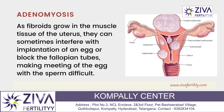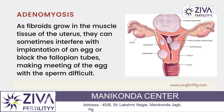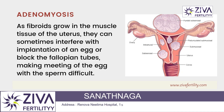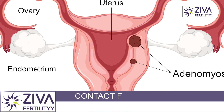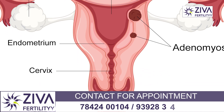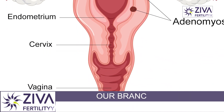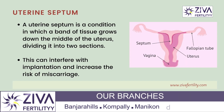Adenomyosis is a condition in which the tissue that lines the uterus grows into the muscle tissue of the uterus. This can cause heavy, painful periods and can also make it difficult for an embryo to implant in the uterine lining.